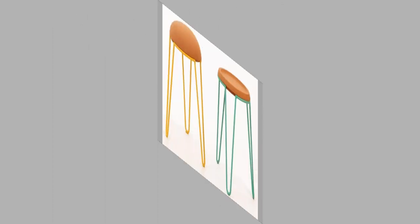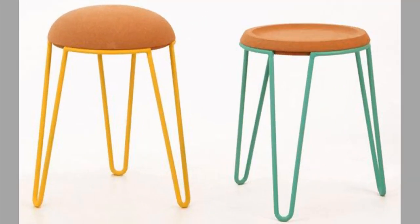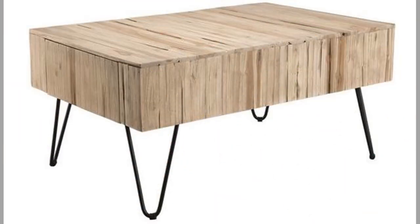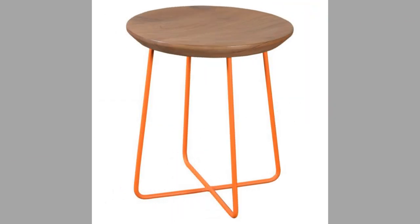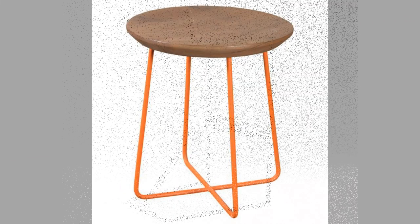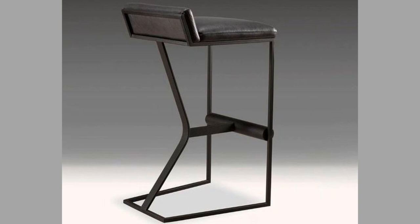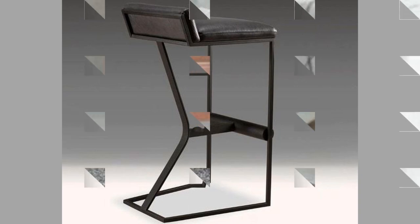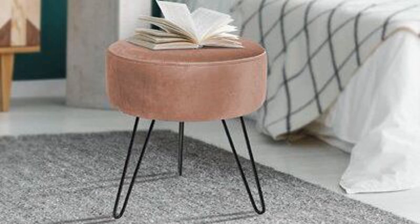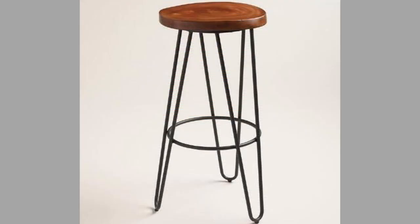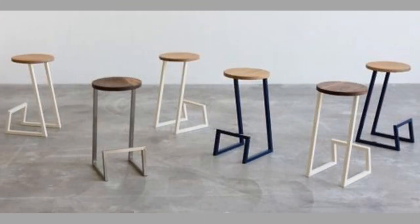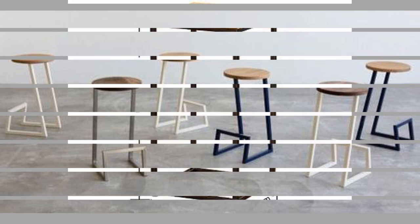For beautification and corrosion resistance, there are different types of finishes applied on metal surfaces — specifically on the metal legs in our case, since we are talking about metal leg stools. Choosing the right finish for metal furniture is important because of its durability. Good finishing results in good durability, while poor finishing results in less durability.